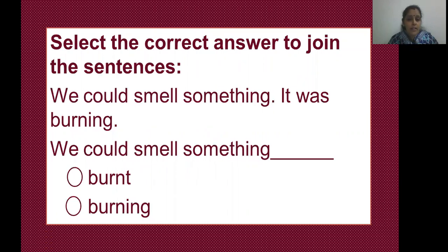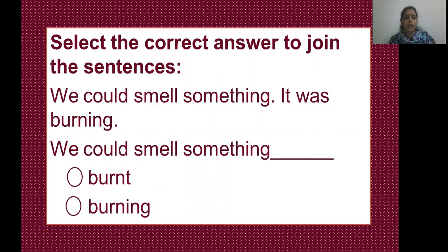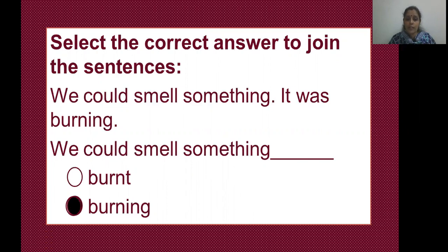Next sentences: 'We could smell something. It was burning.' We are going to join these two sentences. Options are 'burnt' or 'burning.' Yes — we could smell something burning. Clear? Let's move to the next one.